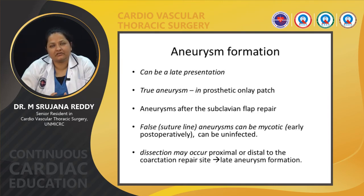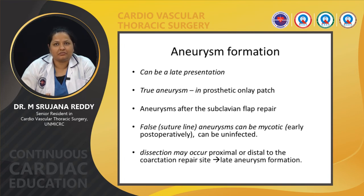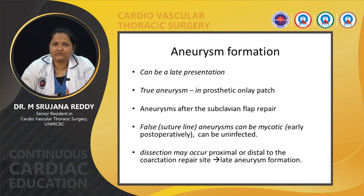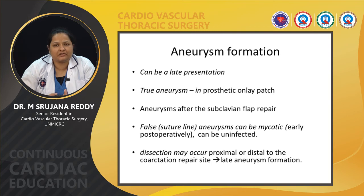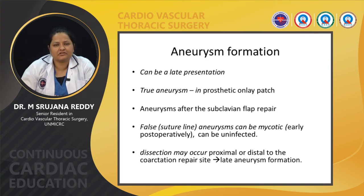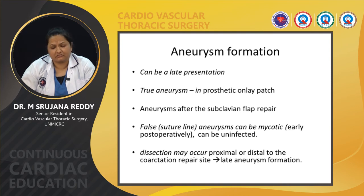A late complication post repair is aneurysm formation. True aneurysms can be seen after prosthetic onlay patch repair, due to excess hemodynamic pressure on the posterior and lateral walls while the anterior wall is augmented with the prosthetic patch. Aneurysms after subclavian flap repair have also been documented. False aneurysms can also be present — if presenting early they are usually infected mycotic aneurysms. Uninfected false aneurysms can occur at suture lines and can also be seen in femoral arteries. Dissection can occur proximally and distally to the coarctation repair, leading to late aneurysm formation.